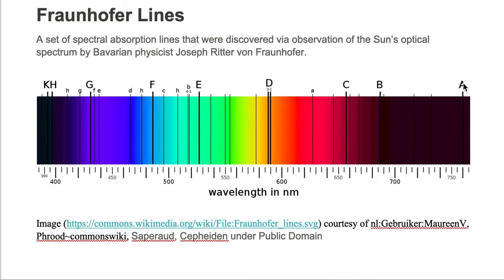Here we're looking at the Fraunhofer lines. The major Fraunhofer lines are the capital letters A, B, C, D, E, F, G, H, and K. And as you can see, there are weaker or thinner black lines, and each of these are labeled in smaller letters. Notice the lines are black against a colored background of the visible band.